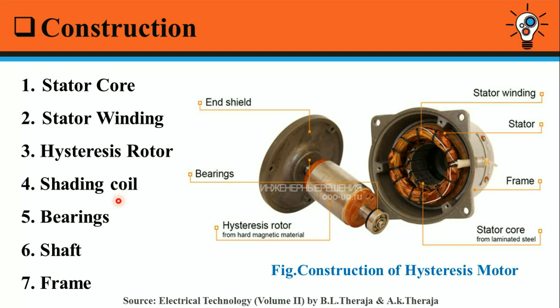Fourth is the shading coil. The shading coil is used to employ the shaded pole principle to give a shaded pole hysteresis motor. Alternatively, stator winding of the type used in a capacitor type motor may be used, giving a capacitor type shaded pole motor. In this type, no centrifugal device is used.